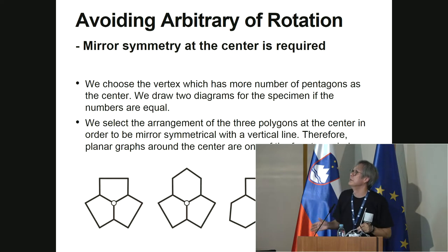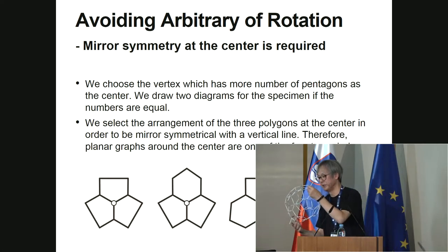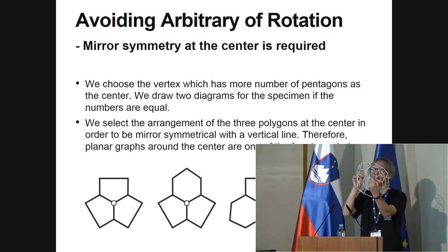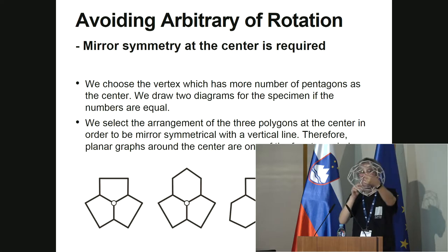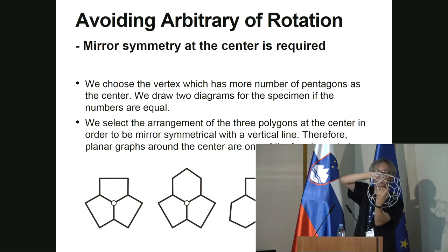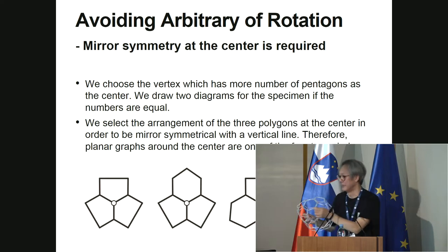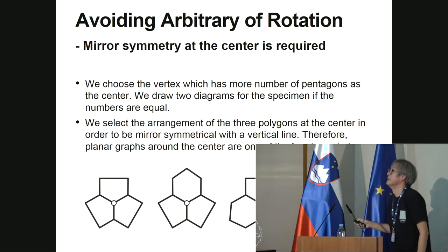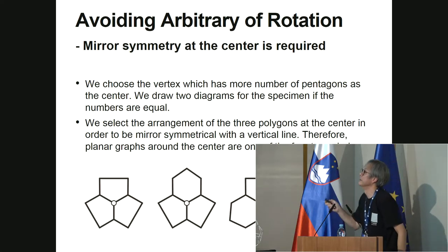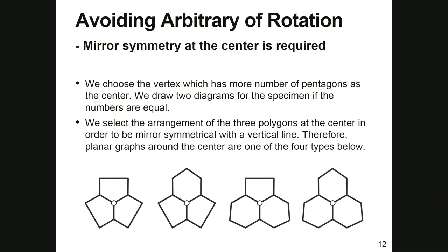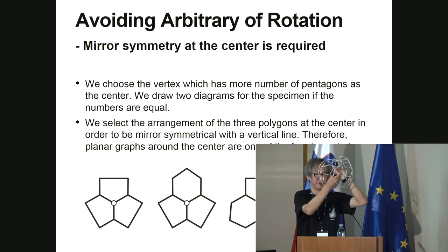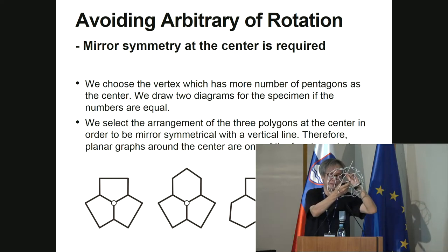We have to avoid the arbitrariness of rotations. This means that for a given specimen, we can draw it by rotating in multiple directions. To fix this problem, we choose the rule that uses more pentagons as a center. For example, if five pentagons are at one position and two pentagons at another, we choose the position with more pentagons as the center.